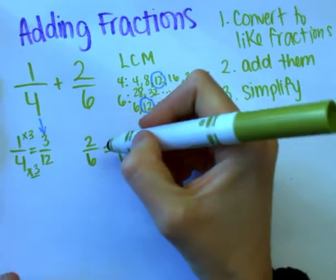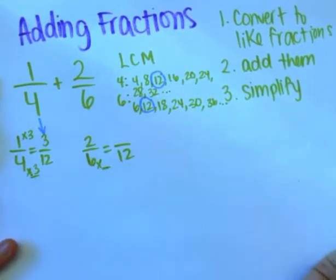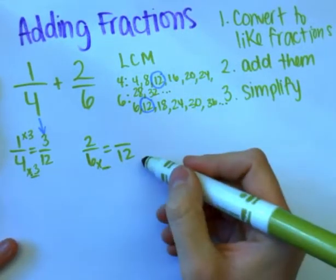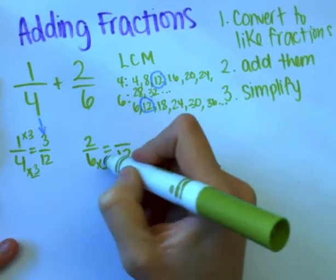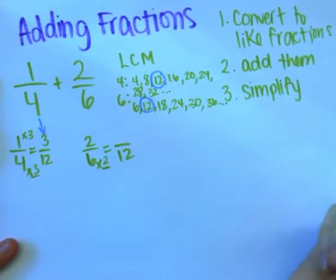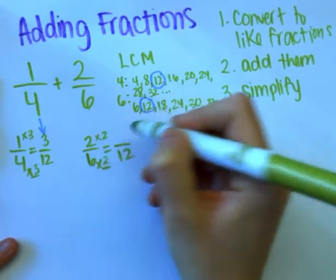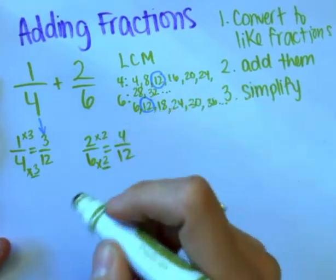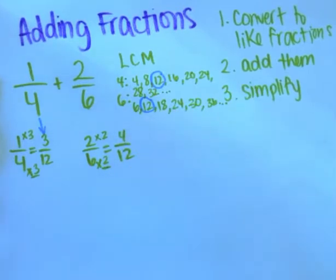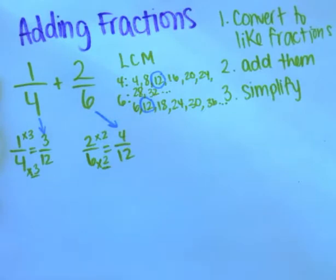Now let's do two-sixths. Six times what gets me 12? Six times two equals 12. So if I do that to the bottom, I need to do it to the top as well. Two times two is four. Two-sixths converted to four-twelfths.